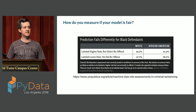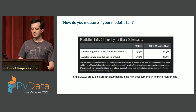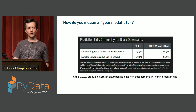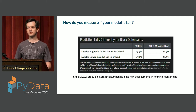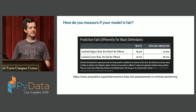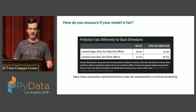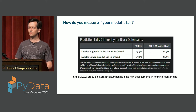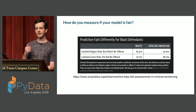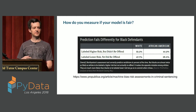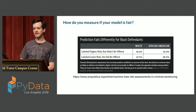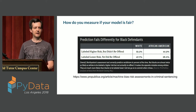ProPublica did a comprehensive examination — there's actually a notebook online with the results of their analysis that you can look up. They analyzed the scores given by Compass to defendants and compared that to whether or not these people had committed crimes after being released from jail, and they found that Compass was biased. For white defendants, the algorithm was much more likely to incorrectly say they would not commit a future crime. For African American defendants, the algorithm was much more likely to incorrectly say they would commit a future crime — more false negatives for white defendants, more false positives for Black defendants. And false positive here means these people might be denied bail.